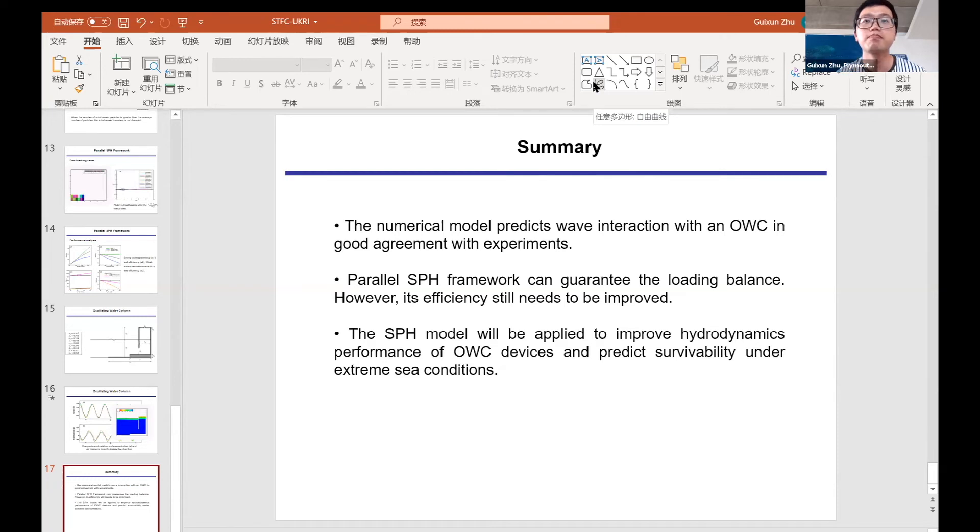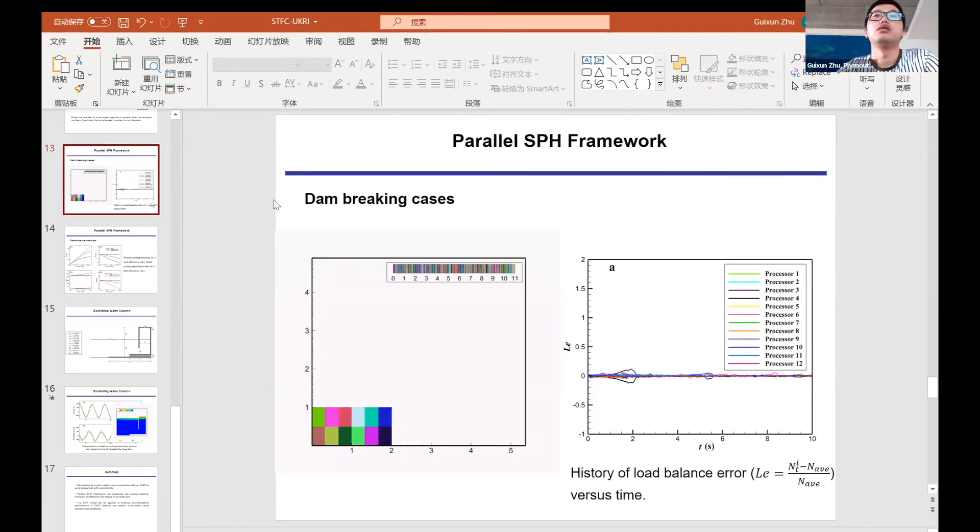Thank you very much. I can't see any questions immediately in the Q&A. If anybody wants to ask anything at all, please do put them into the Q&A. There's a question from Kun Li: how many particles do you have in one domain typically? In this case, we totally use 80,000 particles, so every sub-domain we have almost 8,000 particles.